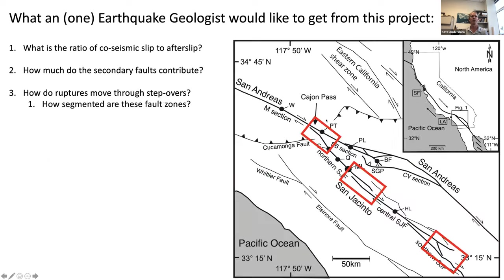My third point is that this project would teach us a lot about how ruptures move through step overs. This fault system is full of step overs, bifurcation zones, and parallel segments. How segmented are these fault zones? Modeling suggests ruptures might stop at these steps, and there are compilations of historic ruptures showing how steps dictated rupture termination. Being able to monitor that in real time would tell us a lot about how we characterize long-term fault hazard. To finish, a couple of thoughts on project design: the even spacing shown doesn't make much sense to me. It would be more interesting to concentrate arrays at interesting locations — step overs, bifurcations, trifurcation zones along the central San Jacinto, parallel strands. I also think it'd be valuable to have one or two arrays at well-studied trench sites like Wrightwood, Mystic Lake, or Hog Lake, where you have a 2,000-year record of earthquakes to compare against any modern event we might catch.